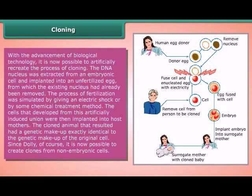The DNA nucleus was extracted from an embryonic cell and implanted into an unfertilized egg from which the existing nucleus had already been removed. The process of fertilization was stimulated by giving an electric shock or by some chemical treatment. The cells that developed from this artificially induced union were then implanted into host mothers. The cloned animal that resulted had a genetic makeup exactly identical to that of the original cell. Since Dolly, it is now possible to create clones from non-embryonic cells.